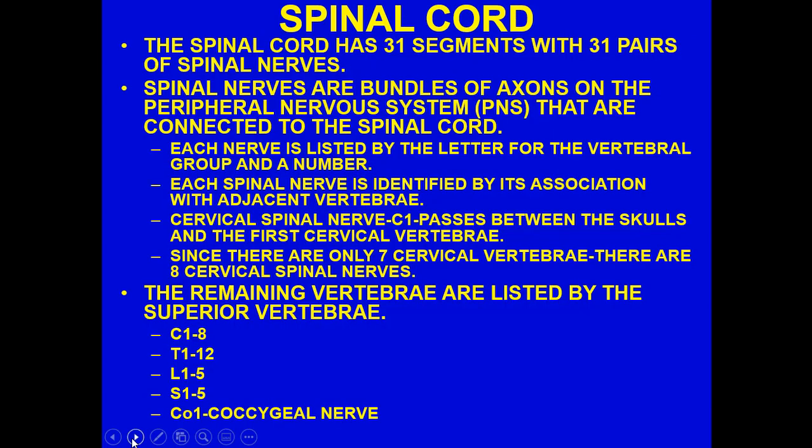The spinal cord has 31 segments with 31 pairs of spinal nerves. Spinal nerves are bundles of axons in the peripheral nervous system connected to the spinal cord. Cell bodies are often located in the spinal cord itself, but have very long axons that stretch to target organs or synapse with interneurons connected to outside organs. Spinal nerves are listed by a letter representing the vertebral group and a number.